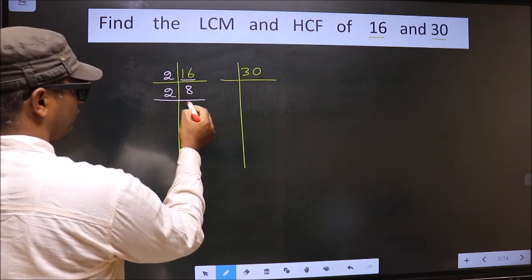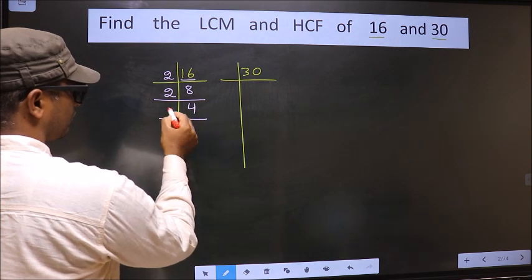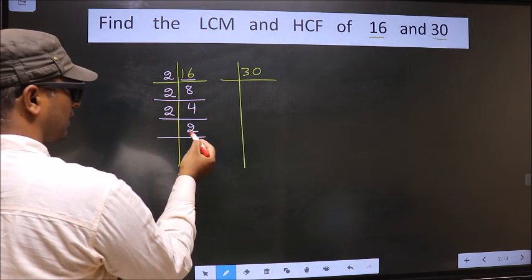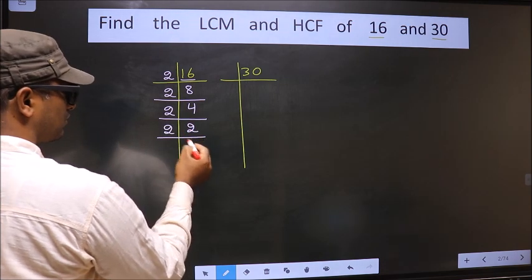Now 8 is 2, 4 is 8. 4 is 2, 2 is 4. Now we have 2, 2 is the prime number. So 2, 1 is 2.